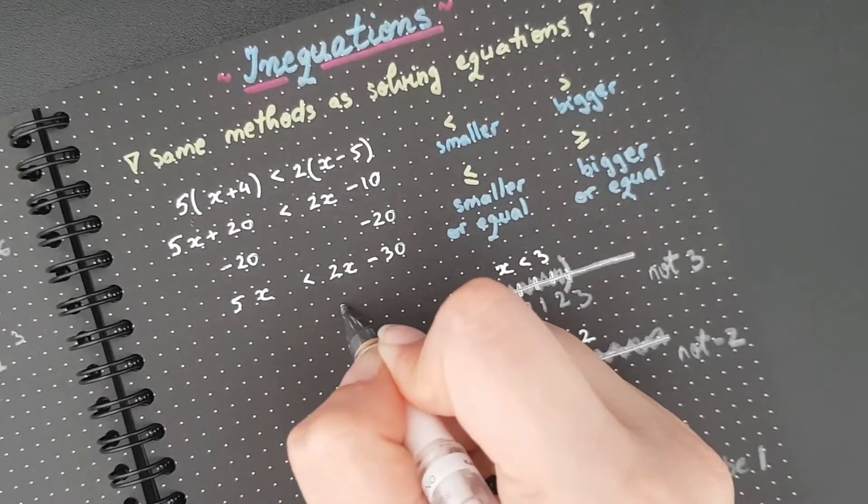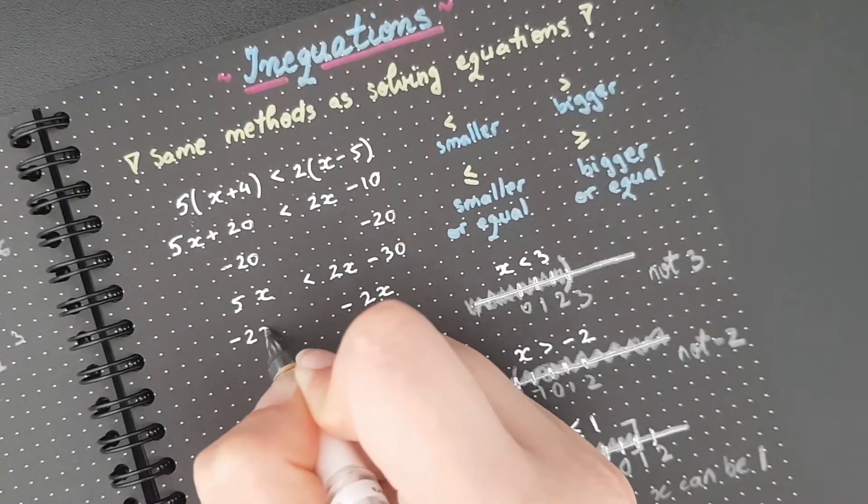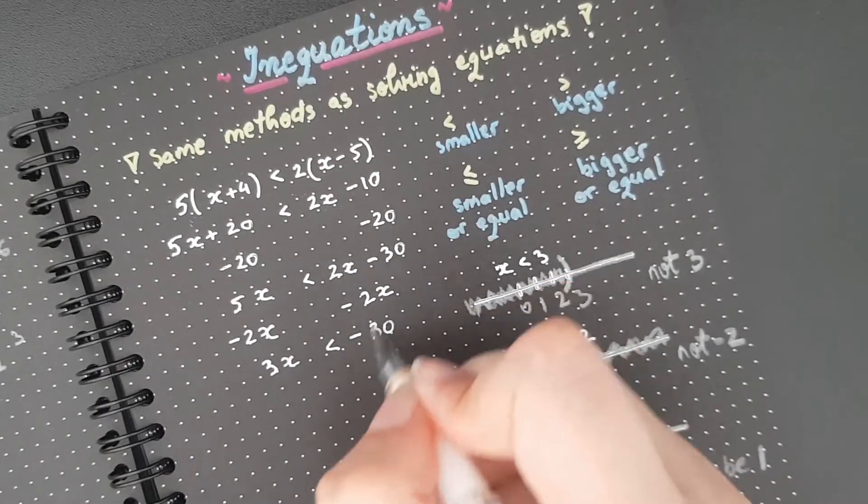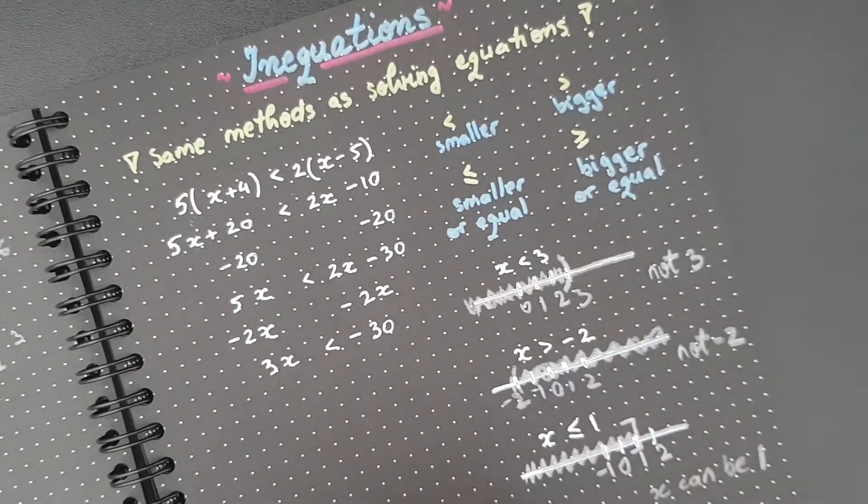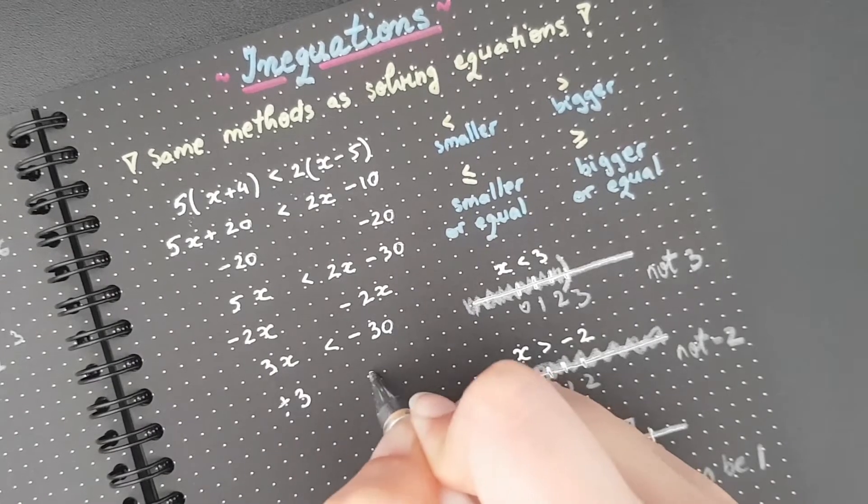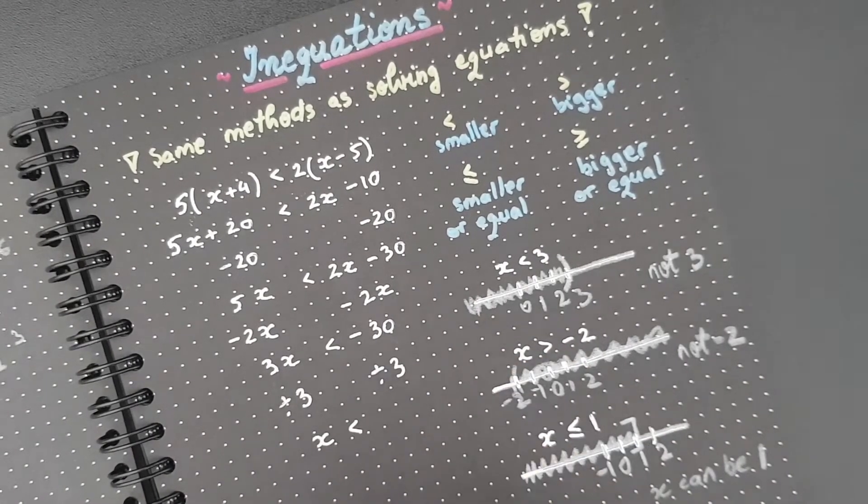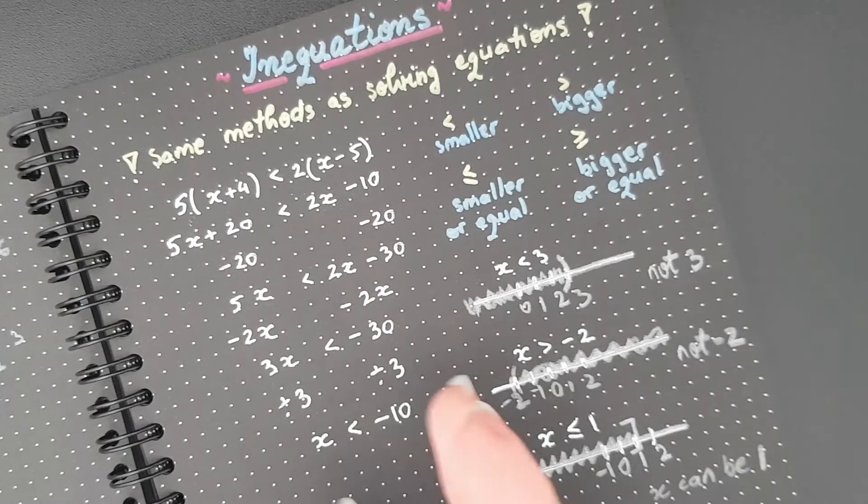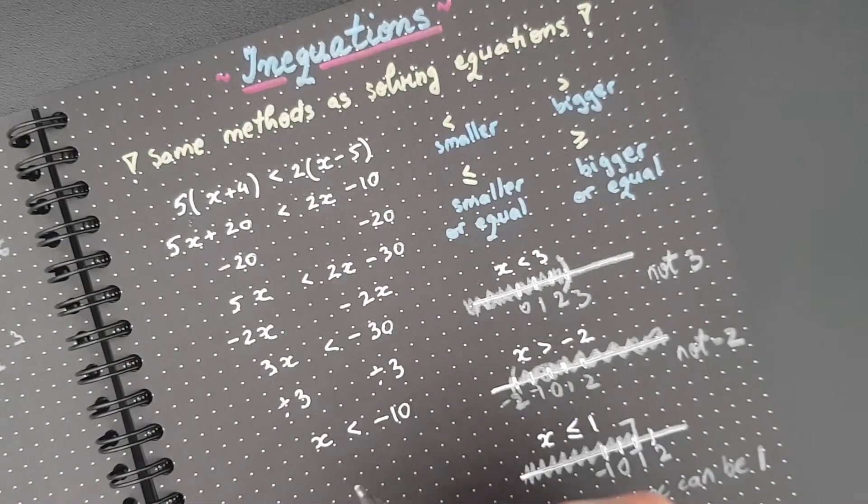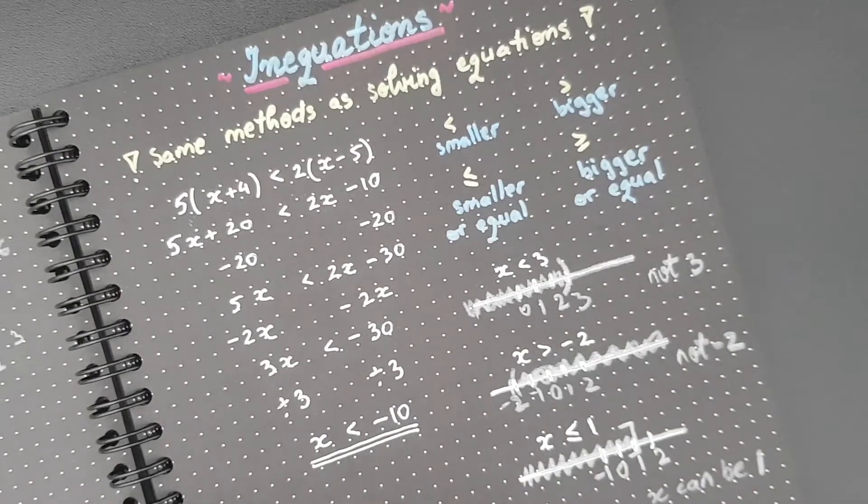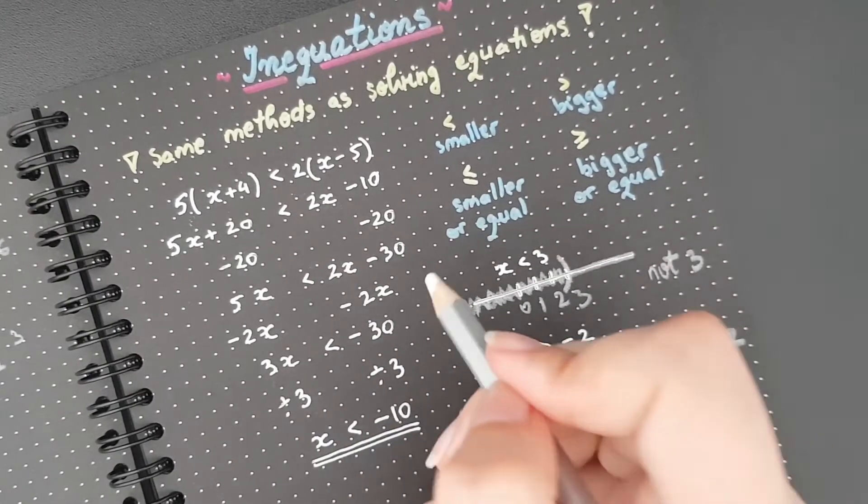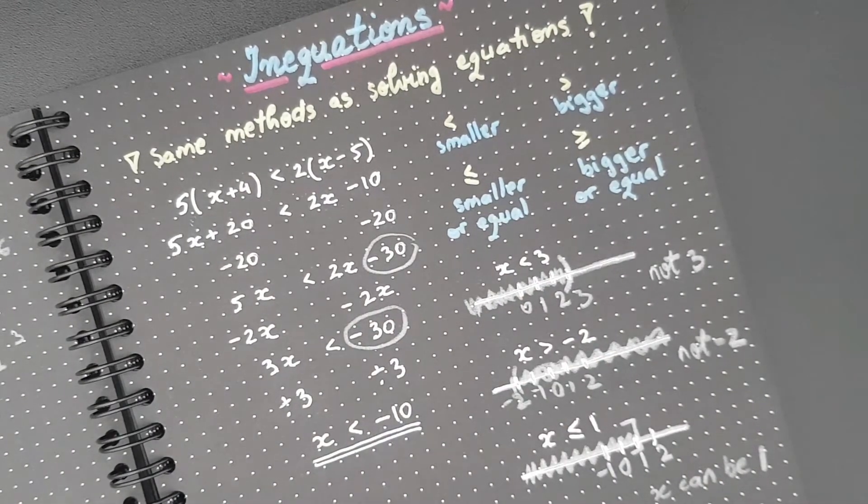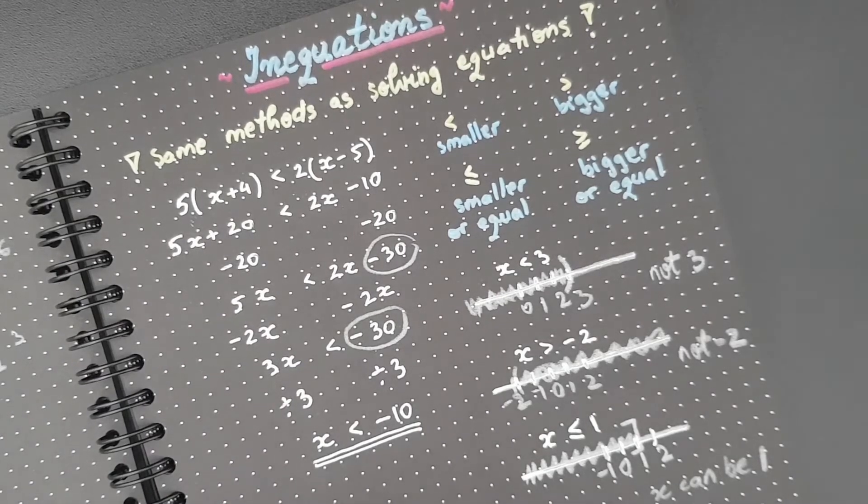I'm going to take away the 2x on both sides. I'm left with 3x smaller than negative 30. So be careful with the signs here. And I am dividing by 3. I get x smaller than negative 10. Absolutely no difference. This is my final answer. I don't need to do anything else. This is the answer. That's the method. The only bit I want to highlight is this. I need to be very careful. I keep it as negative. But we already knew this. There's nothing different.